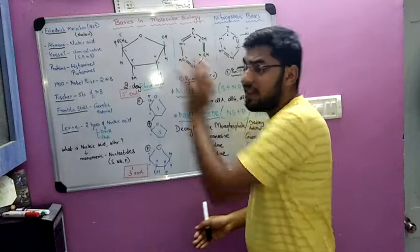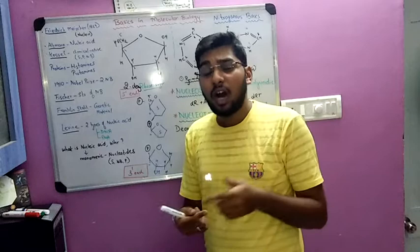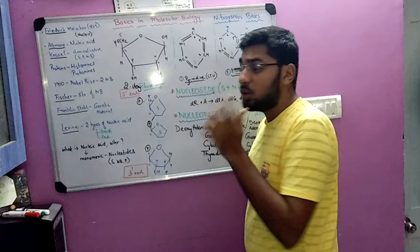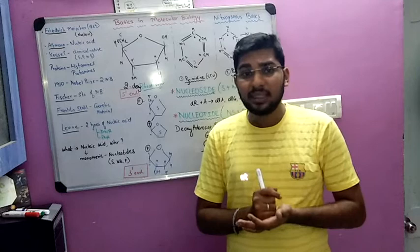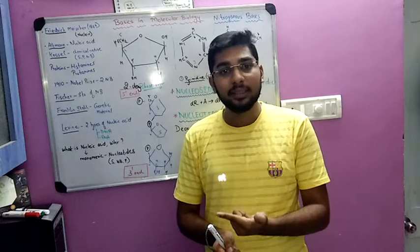You have to remember the numbering of carbon atoms — it is useful for understanding how bonds are formed. Next, we move to nitrogenous bases. Nitrogenous bases are structures that contain nitrogen atoms. Nitrogenous bases are broadly divided into two groups: pyrimidines and purines. Pyrimidines are simple aromatic cyclic ring structures with two nitrogen atoms.